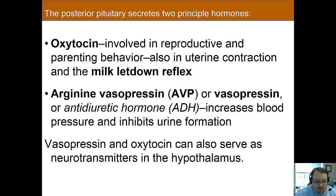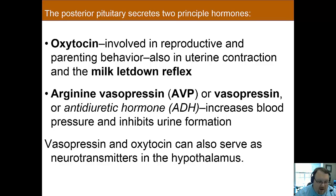Oxytocin and vasopressin have both been implicated in social behavior. For instance, in male mice with oxytocin knocked out — meaning they don't have the receptors for oxytocin and aren't affected by it — they display social amnesia, where they're unable to recognize females they've previously encountered. We'll talk about this a little more later.